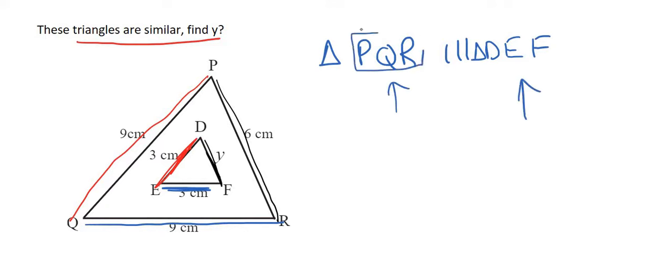So the first triangle I just chose PQR and then you must make sure that these letters go in the correct order. Because what did we learn in the previous lesson? We learned that if two triangles are similar then it means